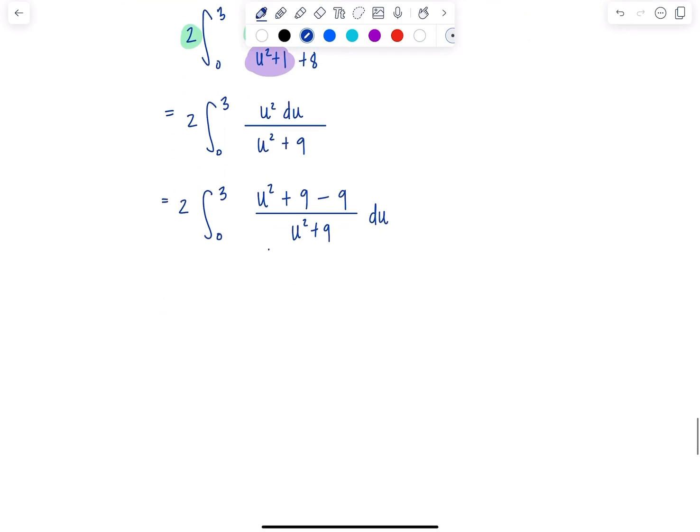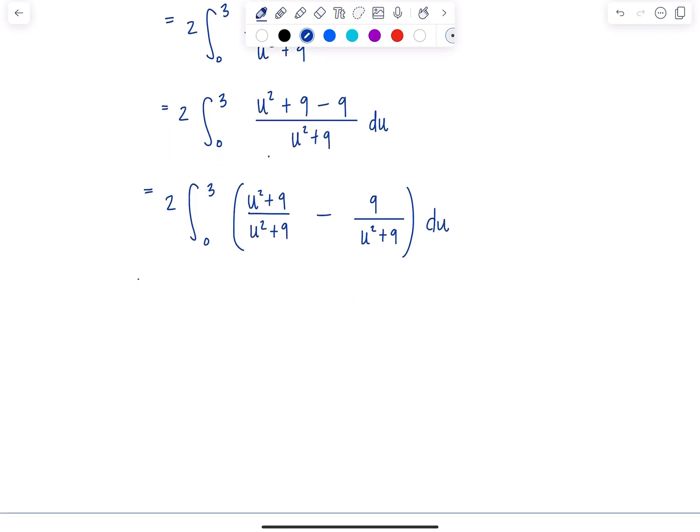And then I can split this up into 2 integral 0 to 3, u squared plus 9 over u squared plus 9 minus 9 over u squared plus 9. Now sometimes you can't avoid the long division, but when it can be avoided, I certainly do. And then we have 2 integral 0 to 3. This is just going to give us 1 minus 9 over u squared plus 9 du. And then from here, you should be home free.